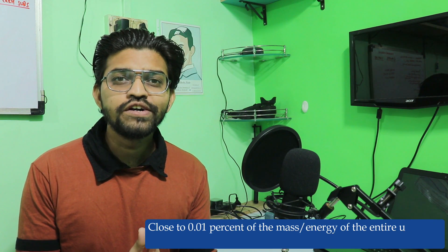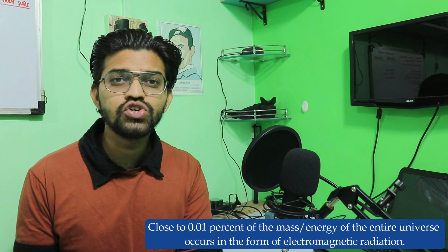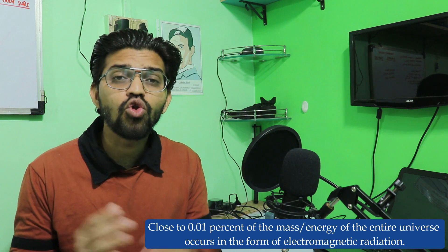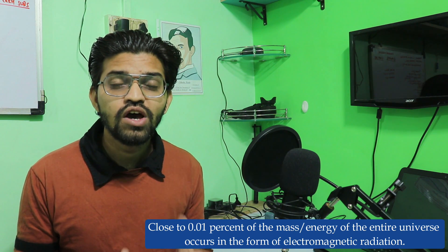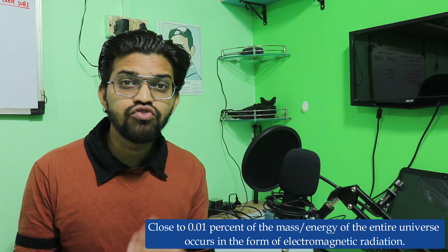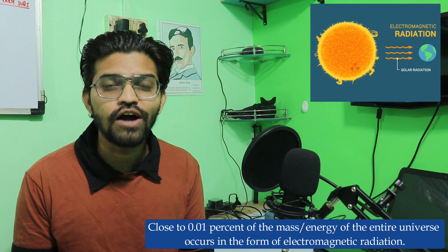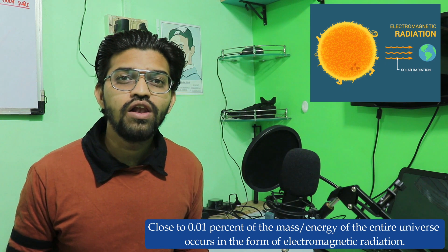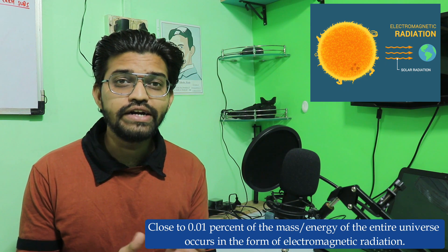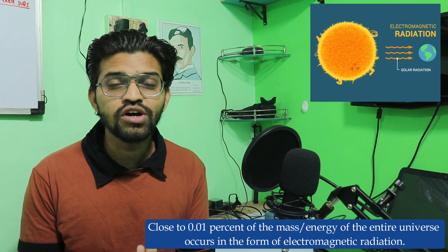Close to 0.01% of the energy-to-mass ratio in the universe occurs in the form of electromagnetic radiation. When we talk about electromagnetic radiation, the first thing that comes to mind is the hot burning star that is our sun. The sun is the ultimate source of all energy and is required for every living organism on the earth.